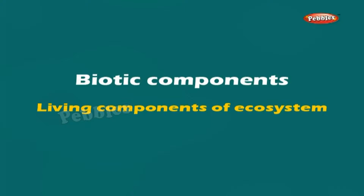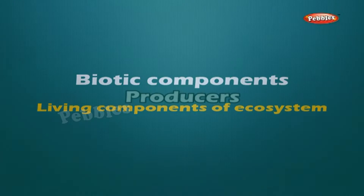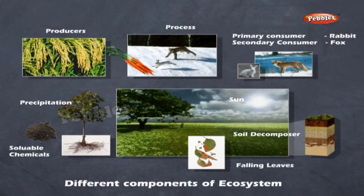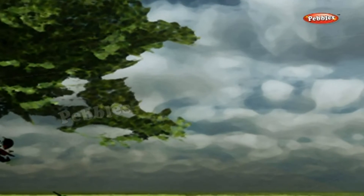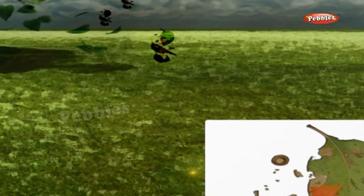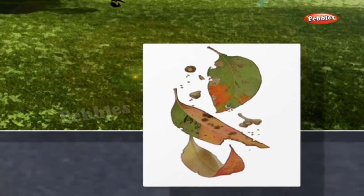Biotic Components include the living components of an ecosystem. Producers include green plants like algae, grasses, and trees, which can prepare their own food by the process of photosynthesis. They contain chlorophyll and convert solar energy into chemical energy of food. They are the source of food for other organisms and are also called autotrophs.